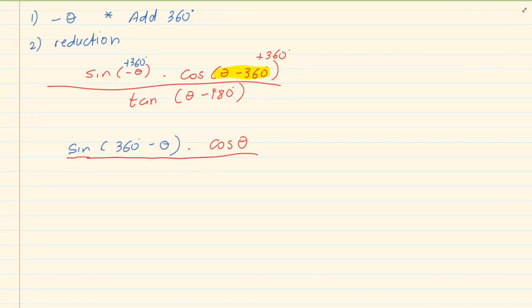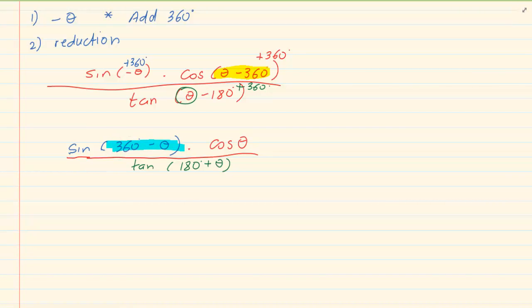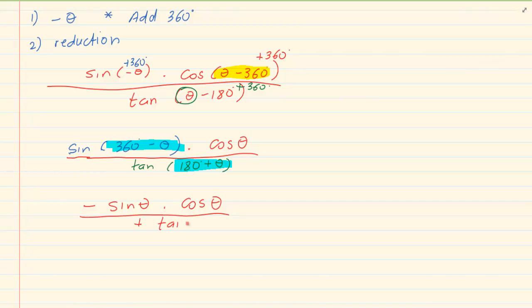With the next one we have the same problem. The norm is not theta minus 180 — it is 180 minus theta. So again we add 360. Now 360 minus 180 gives me 180, so I have tan and then I have 180 plus theta. Once you've changed the way the question looks it's easier because now you've gone back to reduction, and from reduction you can solve. Sin of 360 minus theta is in the fourth quadrant — the value for sin in the fourth quadrant is negative, so we have negative sin theta. Times cos theta is done. And then tan of 180 plus theta — I am in the third quadrant. Tan in the third quadrant is positive, so I've got positive tan theta.